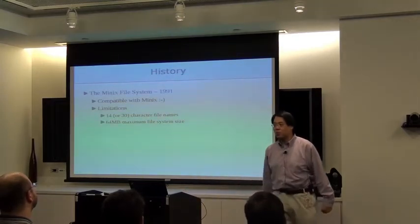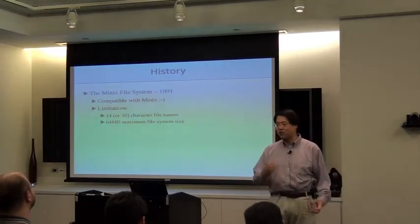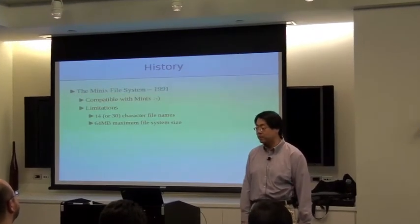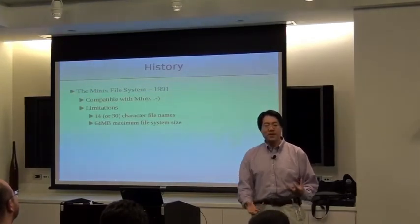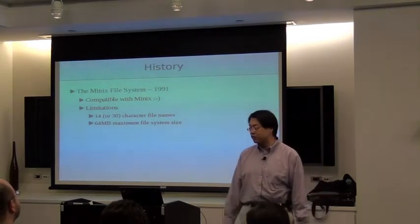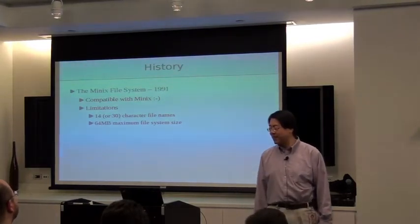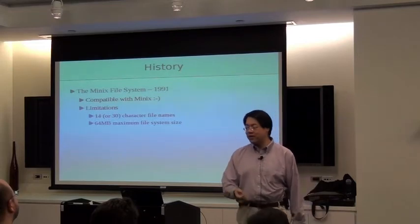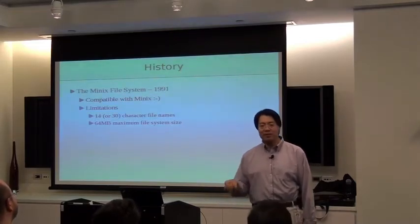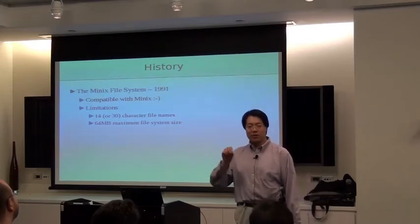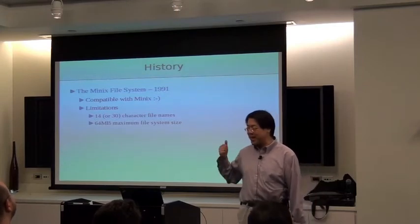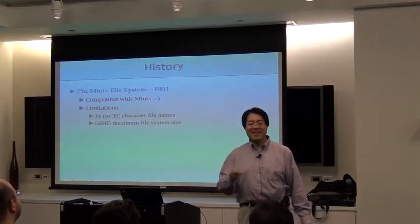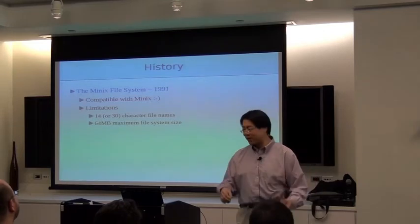Let's set the Wayback Machine and go back to 1991, when Linus first released Linux. The first file system in the Linux kernel tree was the Minix file system, which was important because the Minix user space was what we used to bootstrap the Linux kernel back then. Unfortunately, it had a couple of tiny limitations: depending on how you formatted the file system, it had a hard limit of either 14 or 32 characters for file names, and a maximum file size of 64 megabytes.